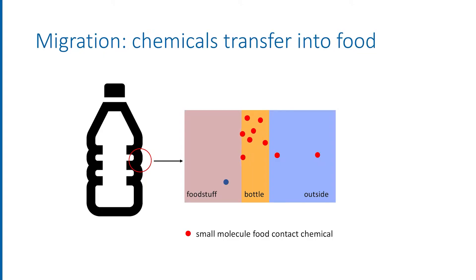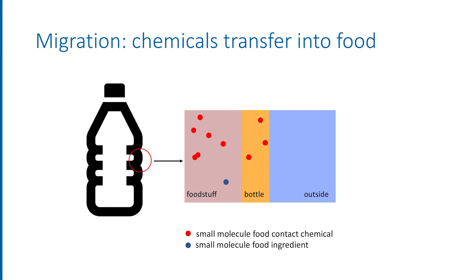If you've watched the other episodes of this video blog before, you will know that chemicals can transfer from food packaging or from any other type of food contact article into food. This process is called migration. The chemicals that migrate are small molecules present in the packaging, or maybe also outside the packaging, like printing inks or glues that stick labels on.